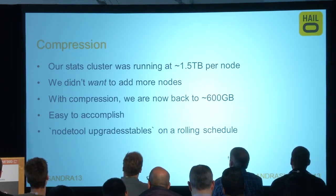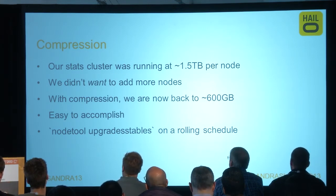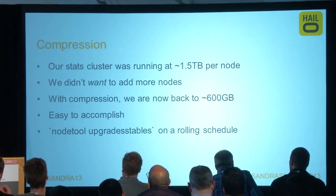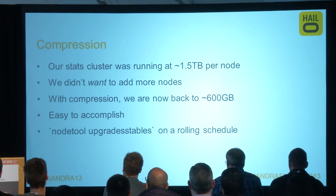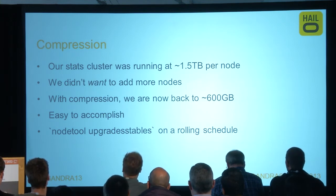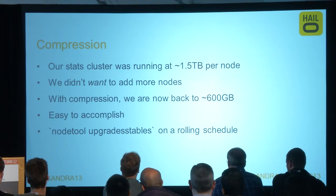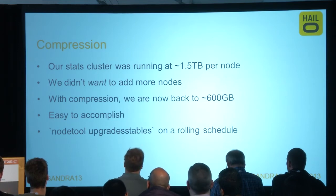We recently started using compression. Our stats cluster was running at about 1.5 terabytes per node, and with Cassandra you need around 50% headroom to do a major compaction — so we needed about 3 terabytes per node, which was more than we had available. We didn't want to scale out for cost reasons, so we tried compression, just to see what happened. We turned it on — it was very straightforward and just worked — and it gave us enormous savings. We're now down to about 600 gigabytes per node. We ran nodetool upgradesstables to apply the compression to all the historical SSTables.